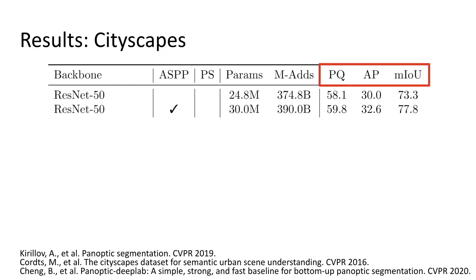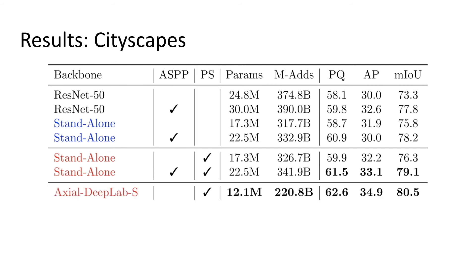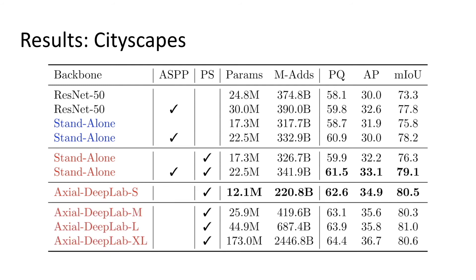Then, we further use it as a backbone for Panoptic Deep Lab, without changing other settings. We show results on Panoptic Segmentation, Instance Segmentation, and Semantic Segmentation. We first add our position sensitivity to standalone self-attention. We see around one point improvement across the three tasks. Switching to Axial Attention improves another one point on all tasks. Note that the Axial Backbone eliminates the need for ASPP. Using larger models can further help the results.